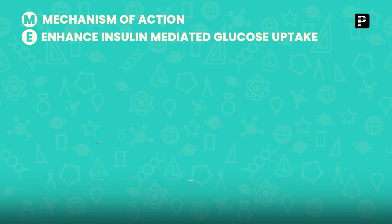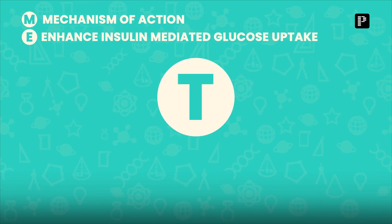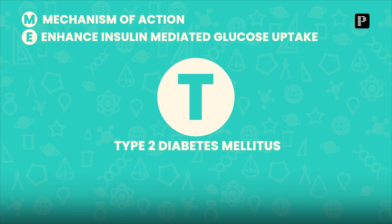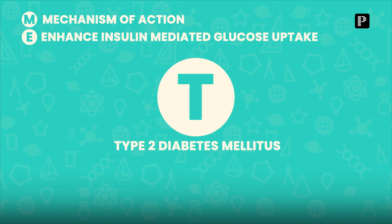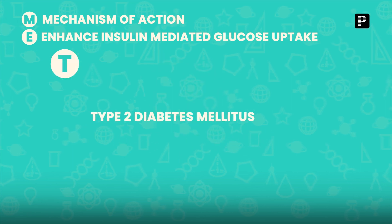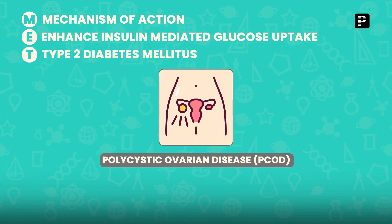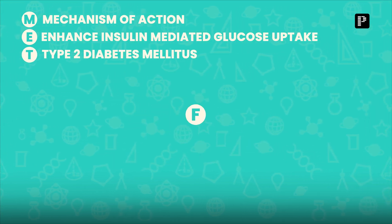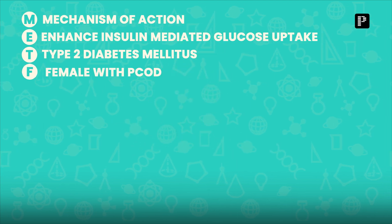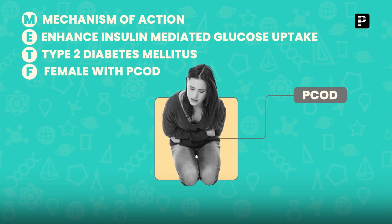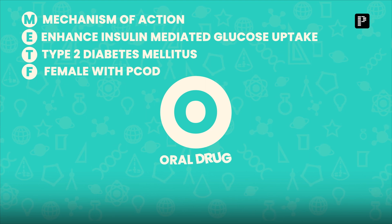The next letter T — remember the drug is approved in Type 2 diabetes mellitus only, not for Type 1. It is also used in PCOD. Then another important letter F — it is used in females. F for female: which female? A female having PCOD.